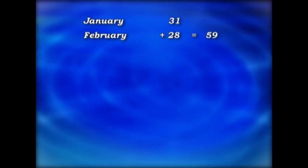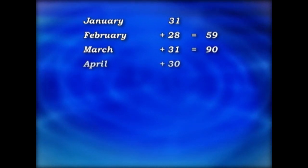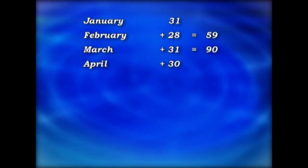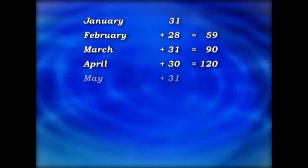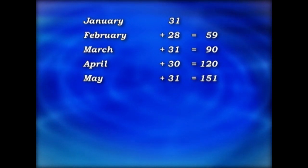January has 31. February has 28. 31 and 28, that's 59. March has 31. 59 and 31, that makes 90. April has 30. 90 and 30, that's 120. May has 31. 120 and 31, that makes 151 days.